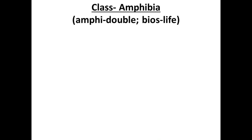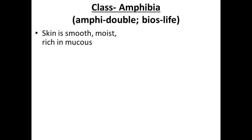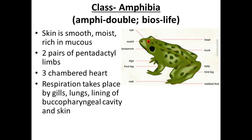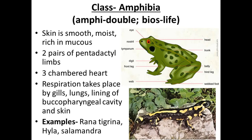Class Amphibia — 'amphi' means double. These animals have a dual nature, living both in water and on land. Their skin is smooth, moist, and mucus-covered. They have two pairs of pentadactyl limbs — like frogs, with fore limbs and hind limbs, each with five digits (pentadactyl). They have a three-chambered heart. Respiration takes place by gills, lungs, lining of the buccal-pharyngeal cavity, and skin. Examples: Rana tigrina (frog), Hyla, Salamandra.